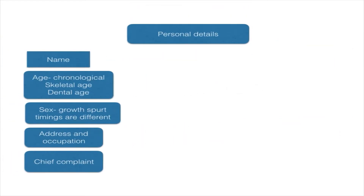First we record the personal details of the patient — the name of the patient, which is used to address the patient. The age of the patient recorded is the chronological age. It can also be skeletal age, which is based on skeletal maturation, and dental age, which is based on dental eruption timings.